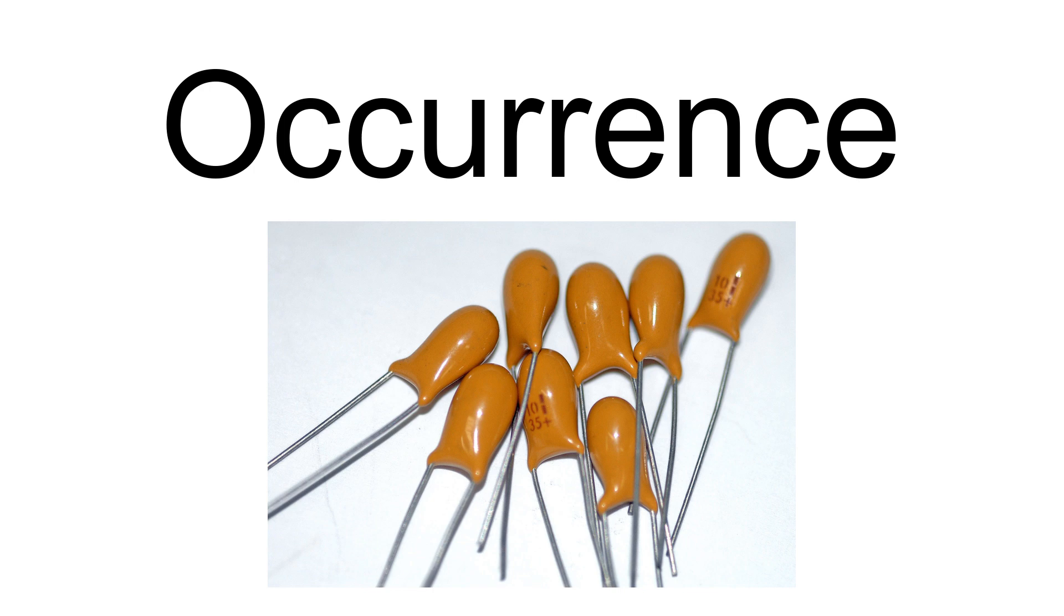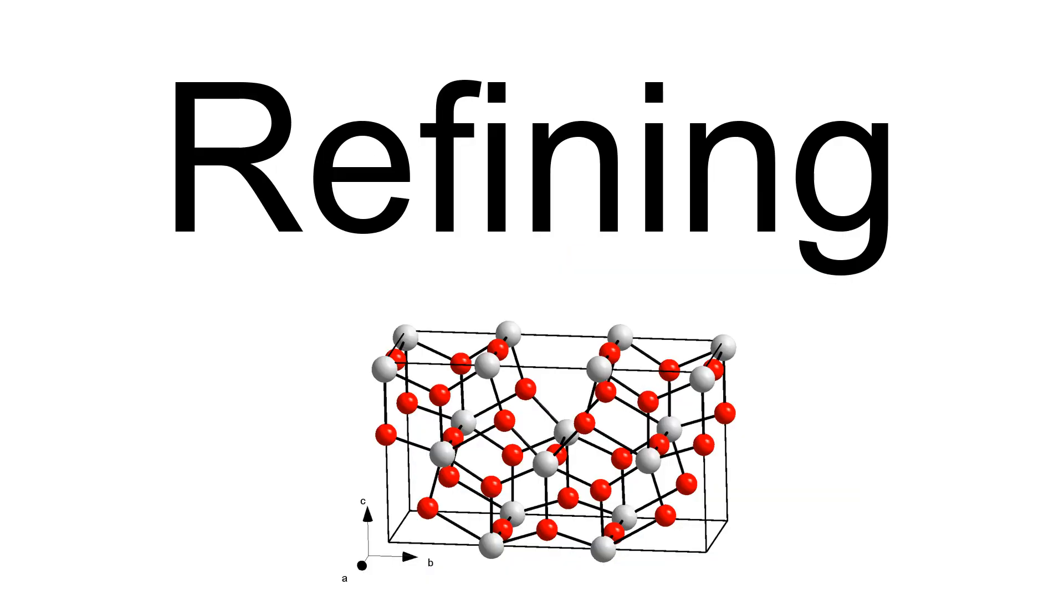Mixtures of columbite and tantalite are called coltan. The minerals microlite and pyrochlor contain approximately 70% and 10% Ta₂O₅, respectively. Tantalum ores often contain significant amounts of niobium, which is itself a valuable metal.